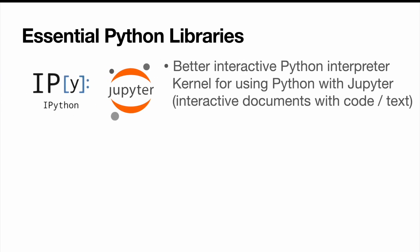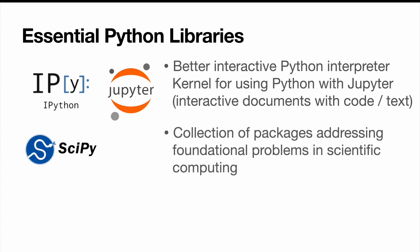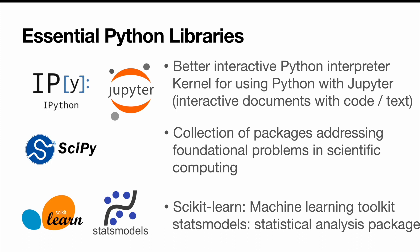Additionally, we are going to work with IPython and Jupyter notebooks. IPython provides a better interactive Python interpreter and is also used as a kernel for using Python with Jupyter. Jupyter notebooks are interactive documents that combine executable code with text and can be great for working through different examples — we're going to see a lot of those in the upcoming videos. SciPy is a library that provides a collection of packages addressing foundational problems in scientific computing. We are also going to use Scikit-learn, which is a machine learning toolkit, as well as StatsModels, which is the statistical analysis package.